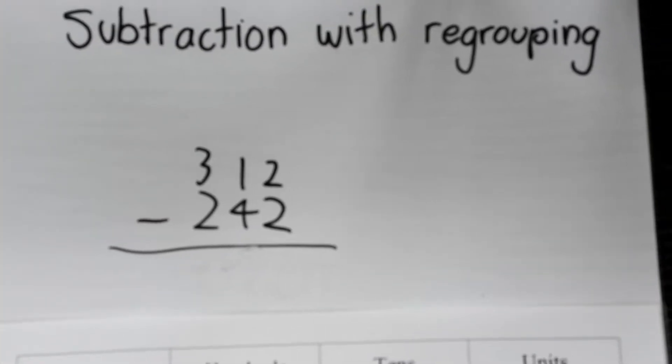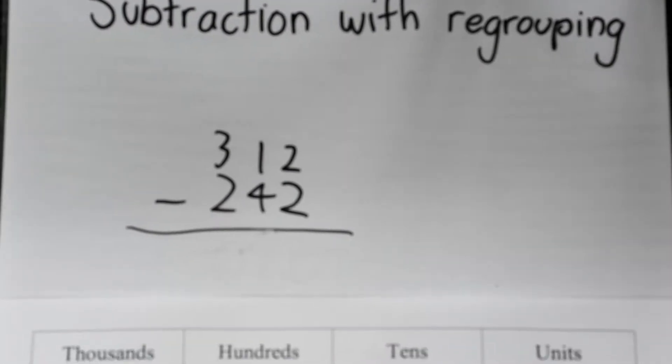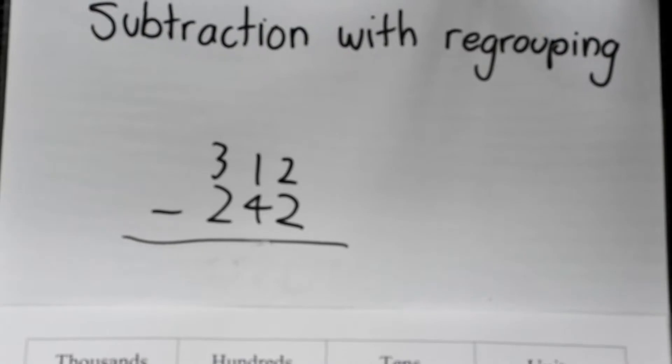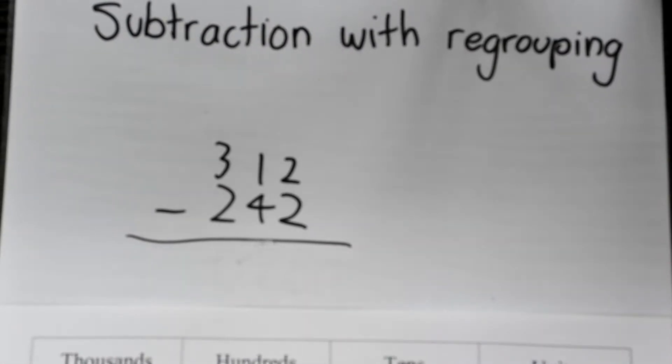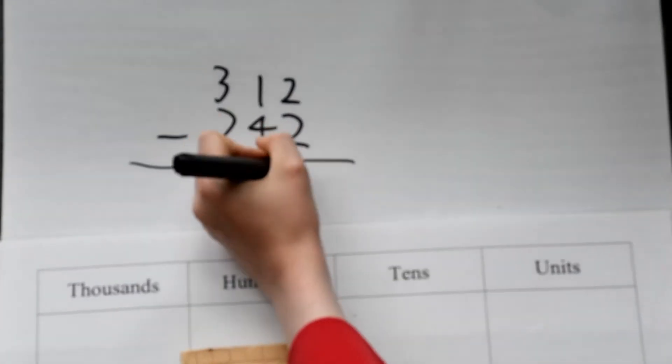Today we are going to be doing subtraction with regrouping. Our sum is 312 minus 242. We always start on the right side with the units. Our first calculation is 2 minus 2, which equals 0.